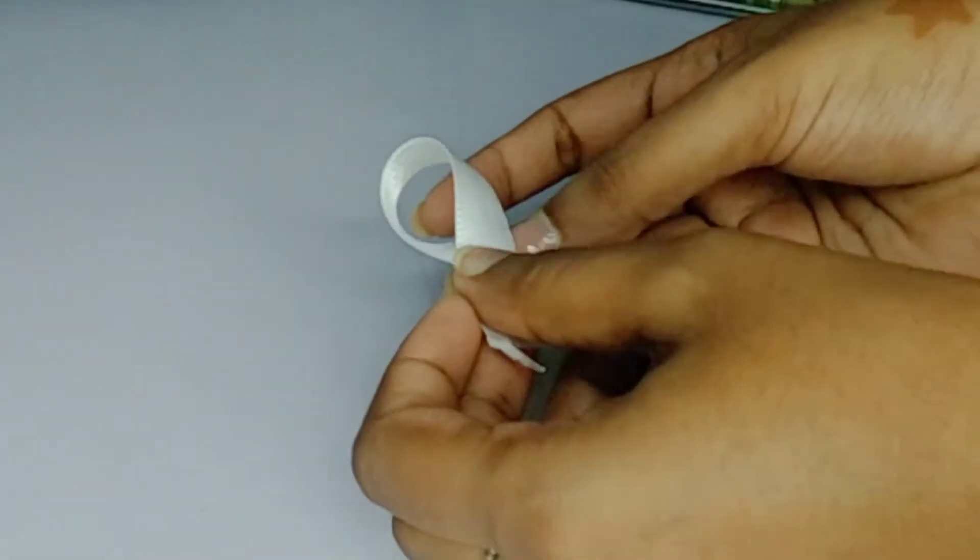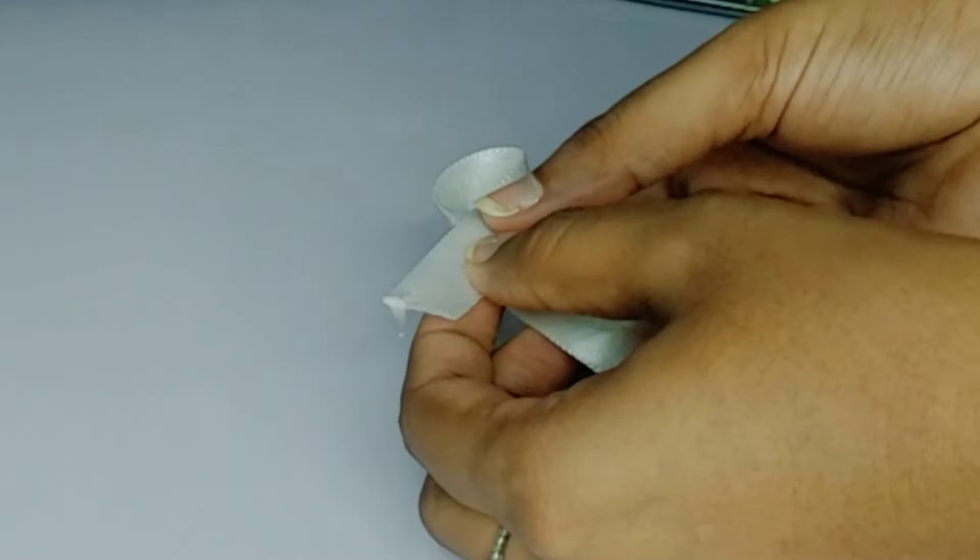First, we will twist it with white ribbon and twist it. After twisting it, we will cut the extra ribbon and remove it.